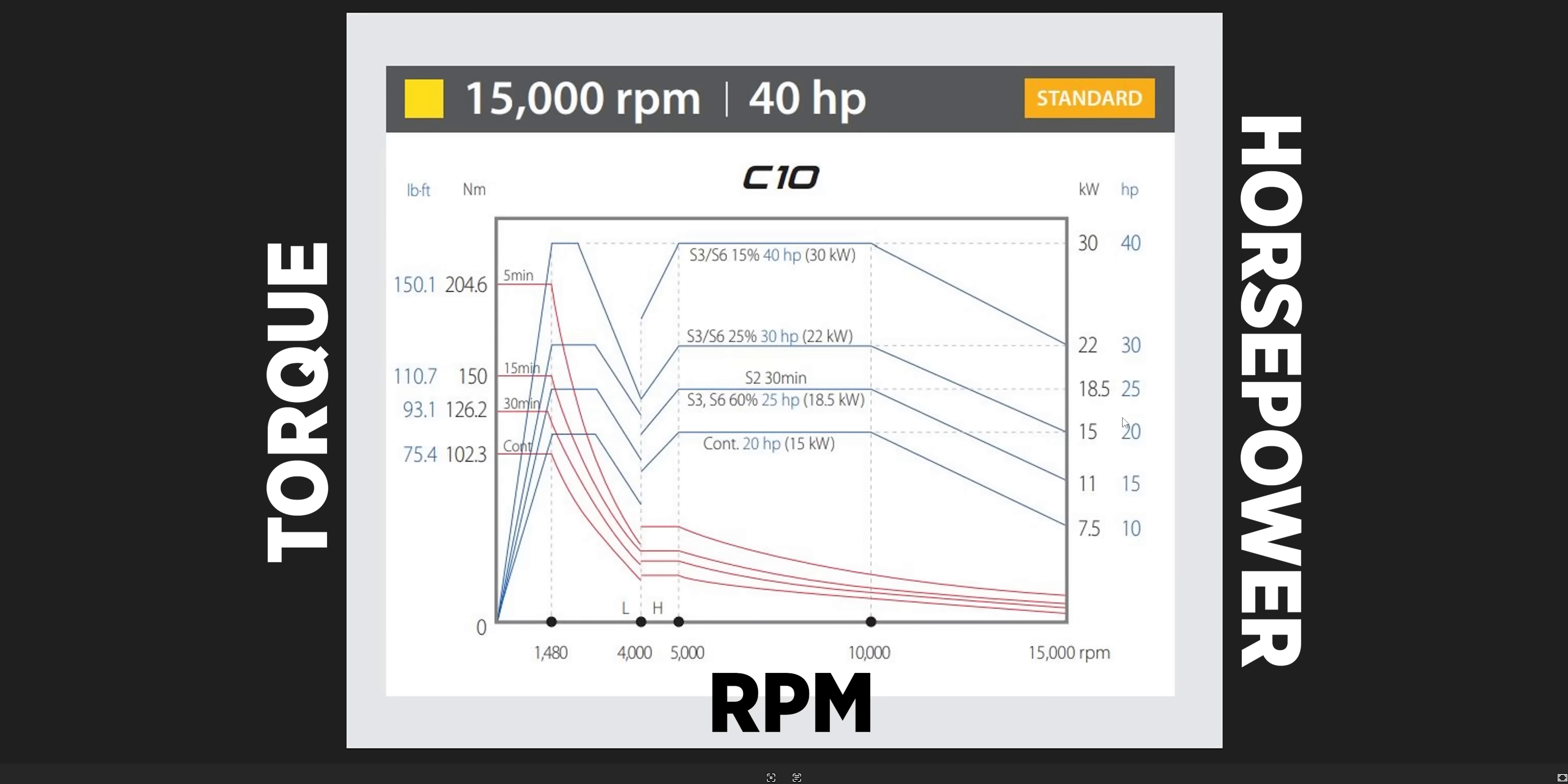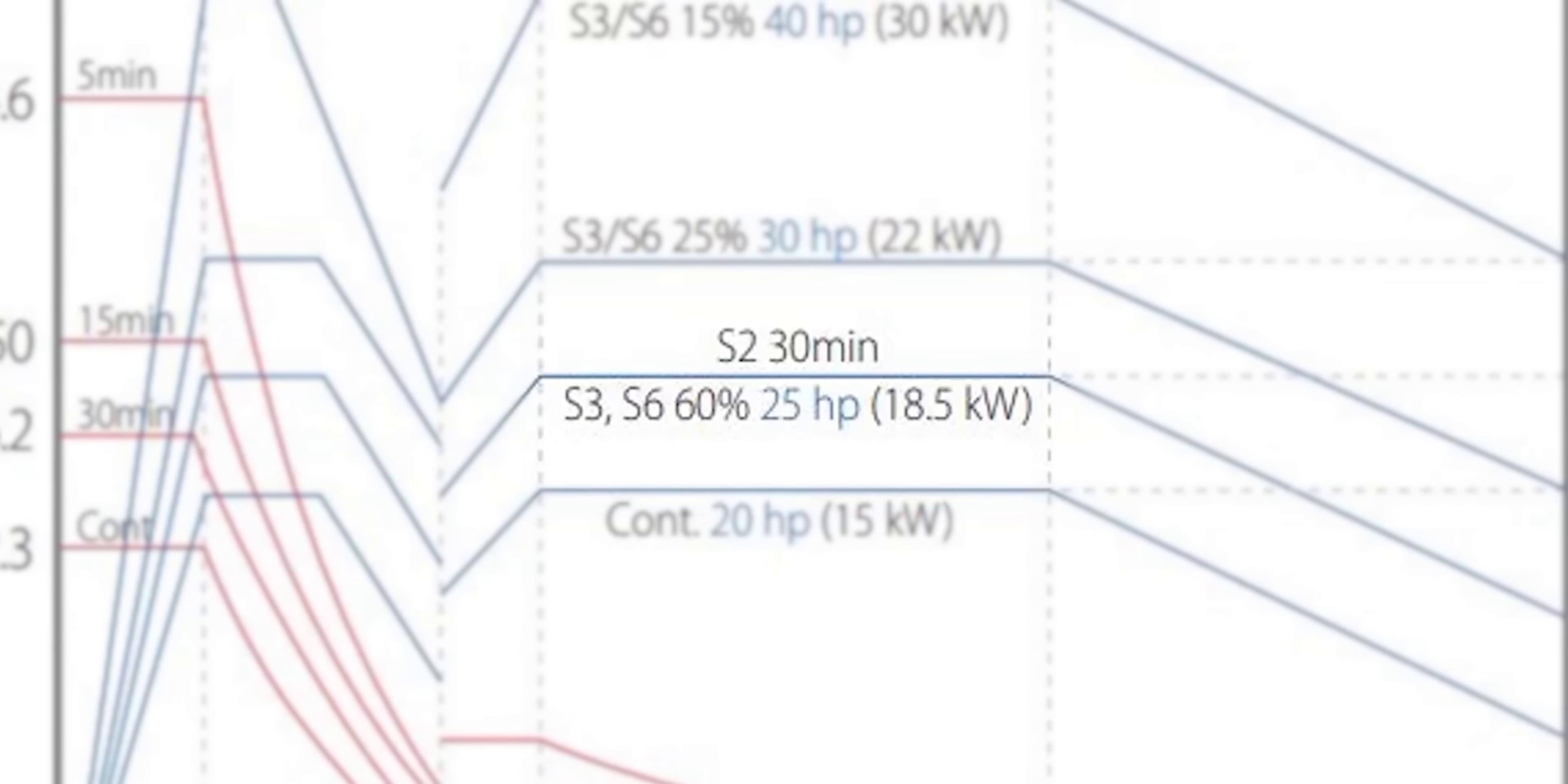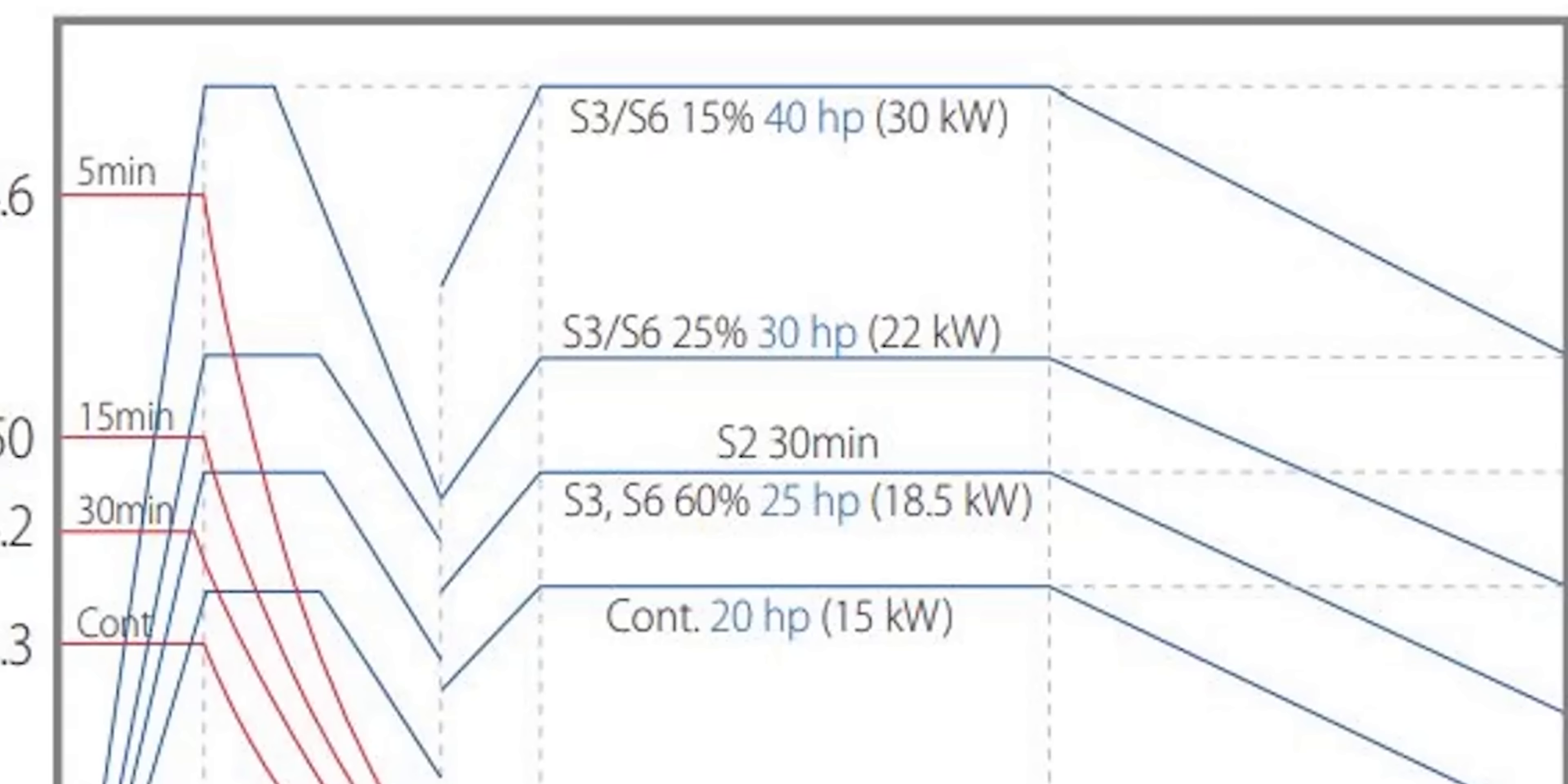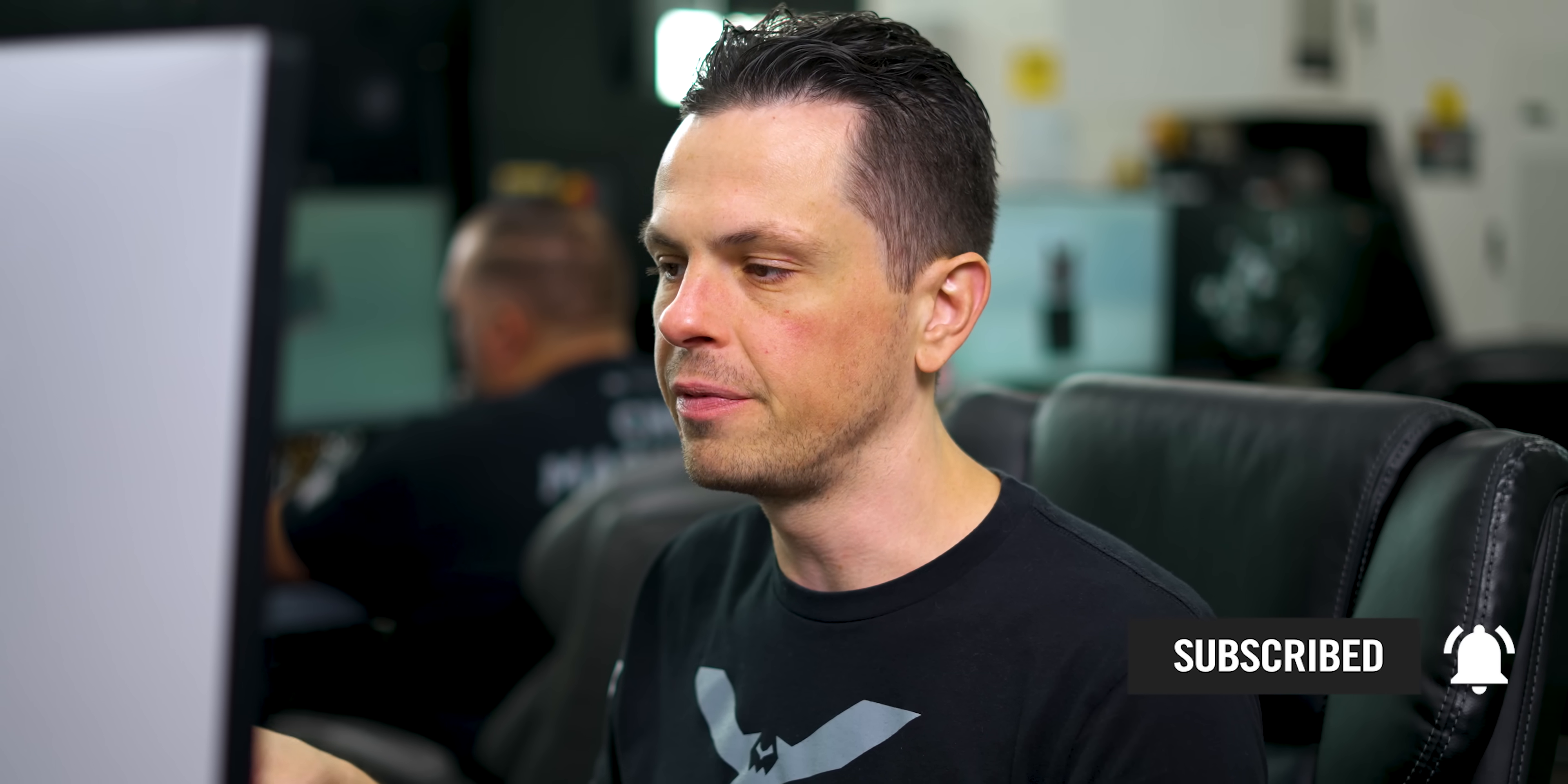Our bottom blue line is our continuous horsepower. We can run at these speeds and feeds all day without having any issues. Then as we move up the chart, we have S2, which we can run at for 30 minutes. And then we have S3, S6, which we can run at 30 horsepower for 25% of the time and at 40 horsepower for 15% of a 10 minute cycle. After we've hit these limits, we need to let the machine cool down. This chart's going to make a lot more sense once we look up what our tool will actually need to run at the programmed feeds and speeds.